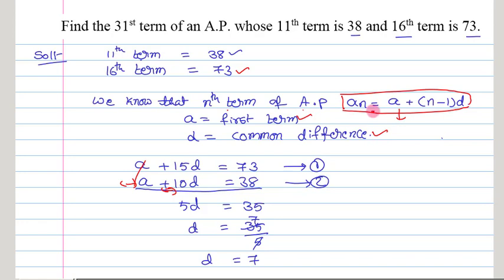Using this formula, the 16th term can be written as a + 15d = 73, and the 11th term as a + 10d = 38. On subtracting both equations, the a term cancels. Then 15d - 10d gives 5d, and 73 - 38 gives 35. From this, d = 35/5.